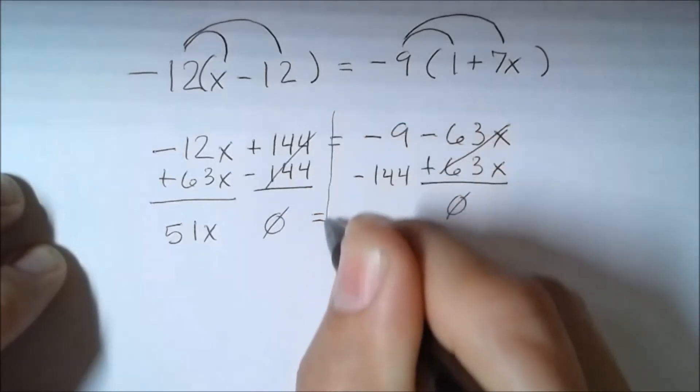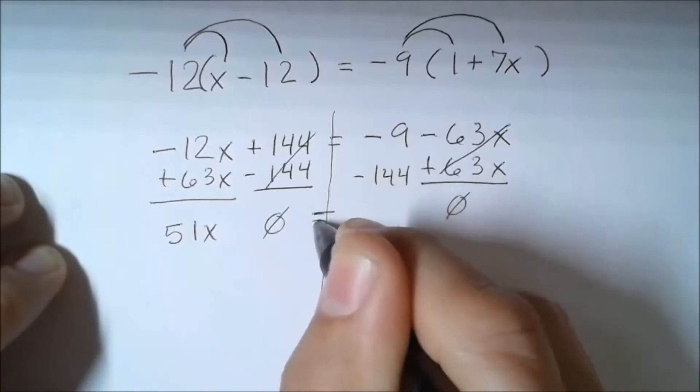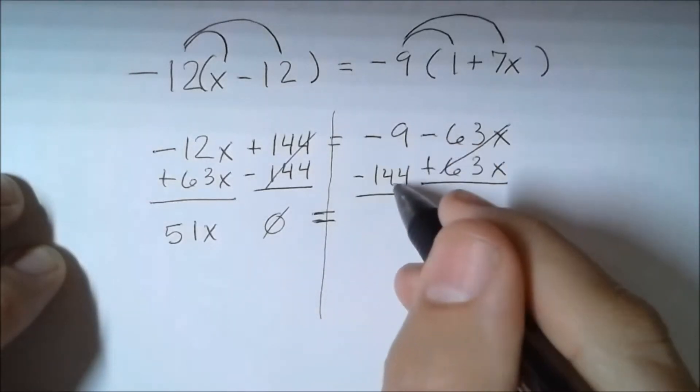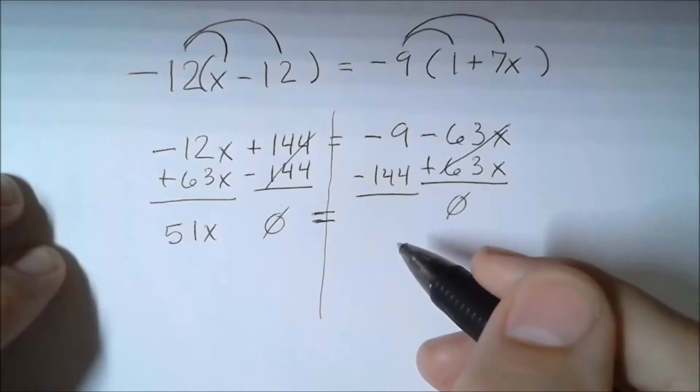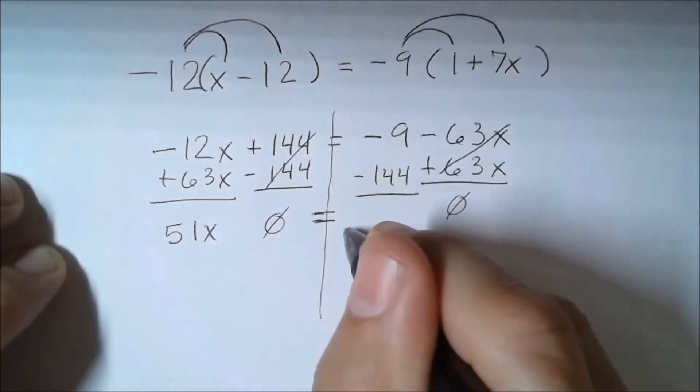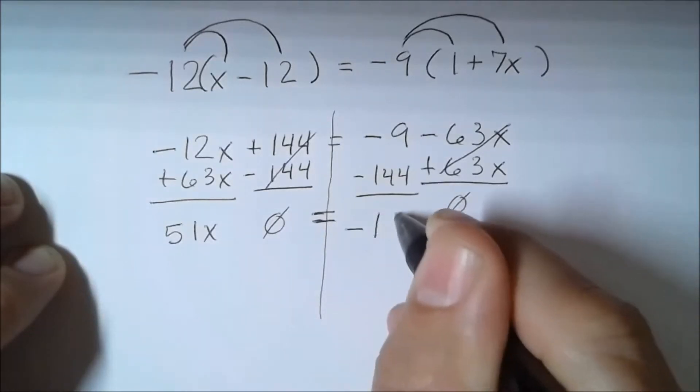I'm going to draw a line just so you can see that we're keeping things separate on our equation. So negative 9 and negative 144, if we put that together, it's going to give me negative 153.